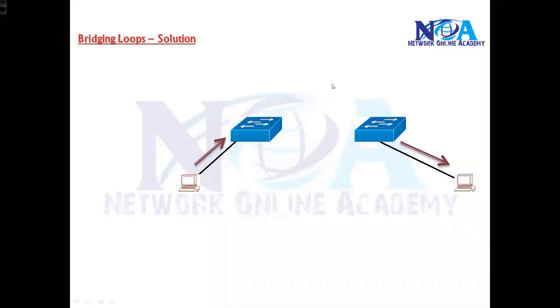Now to overcome this bridging loop issue, we need to have a solution. Of course, the end solution is spanning tree, that's what we'll be seeing. But let's try to figure out what are the other possible options we can go with.